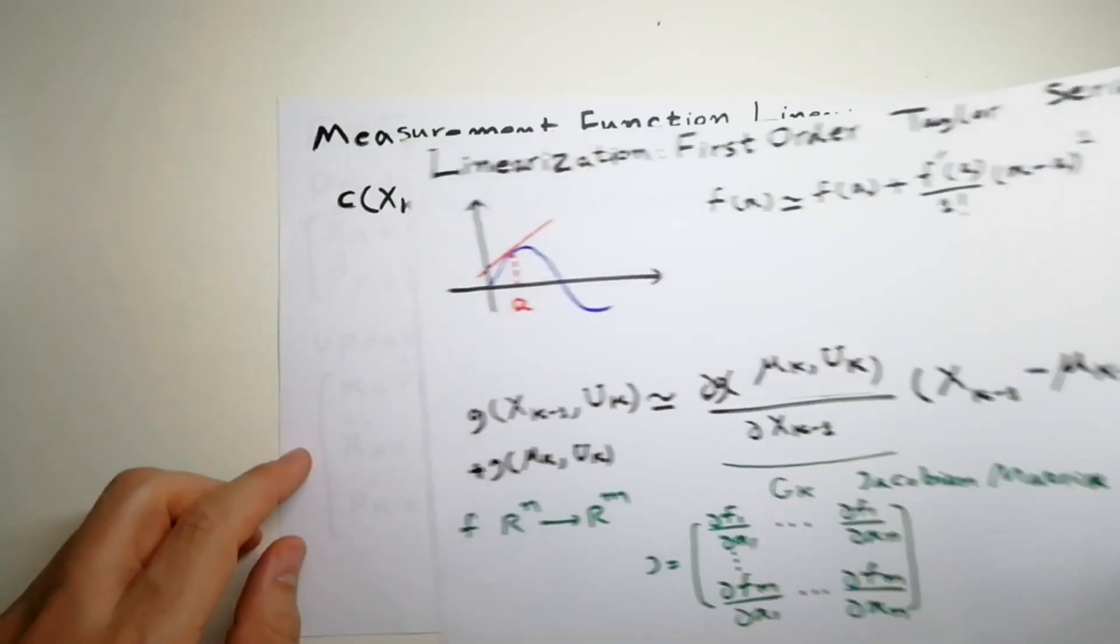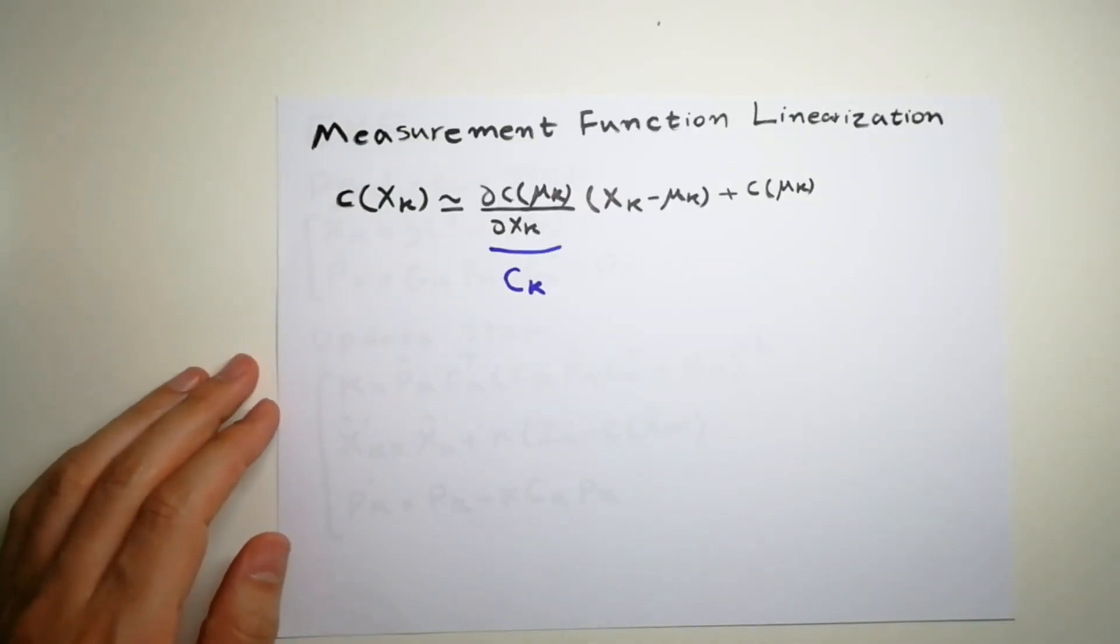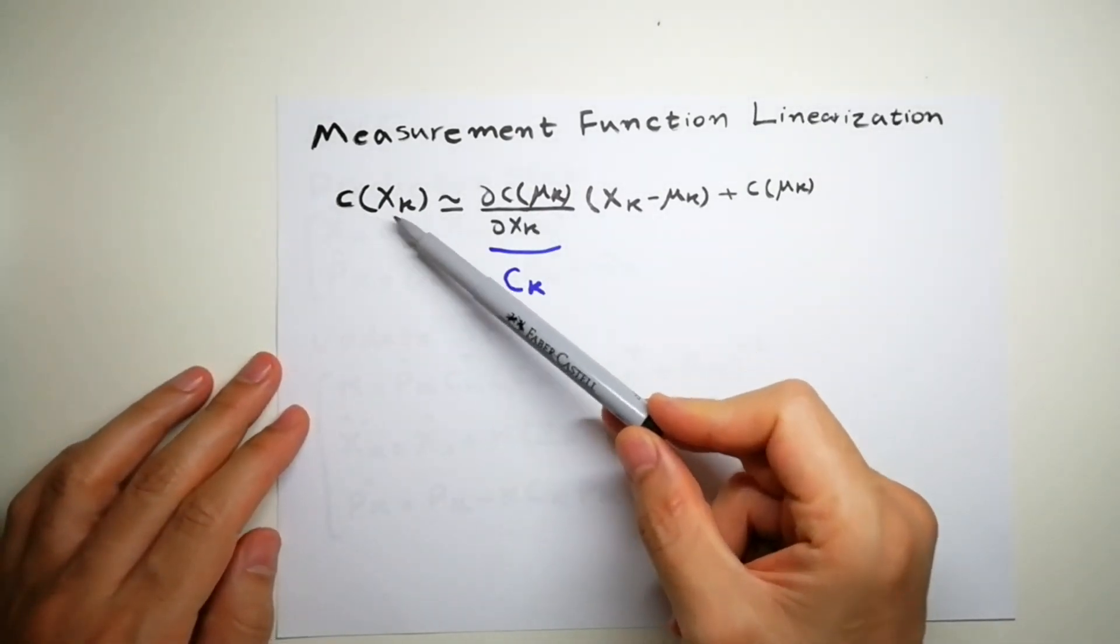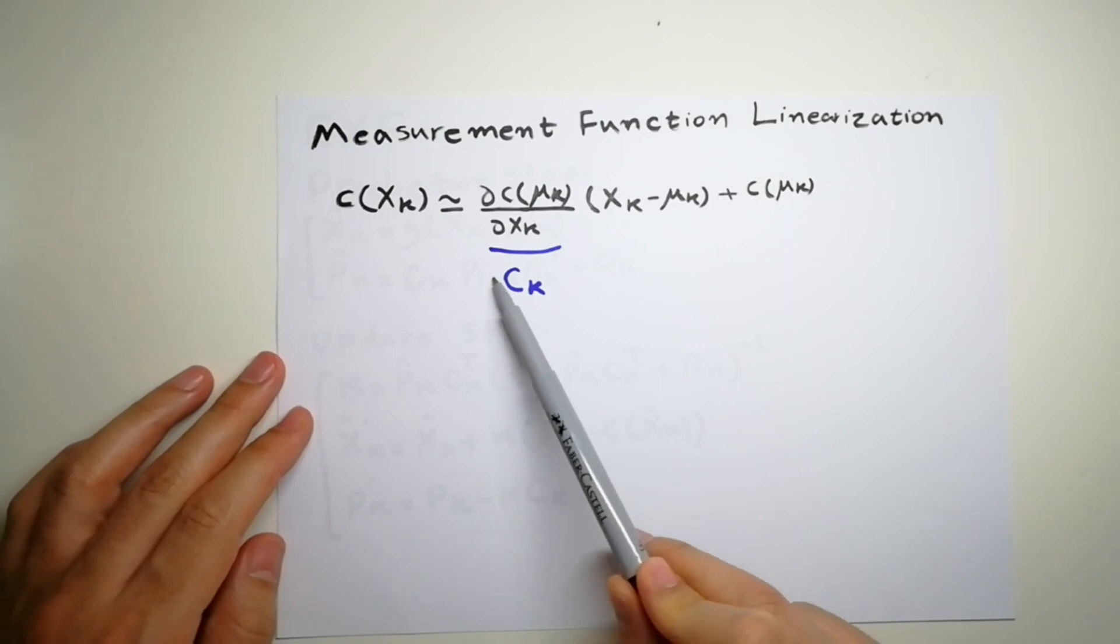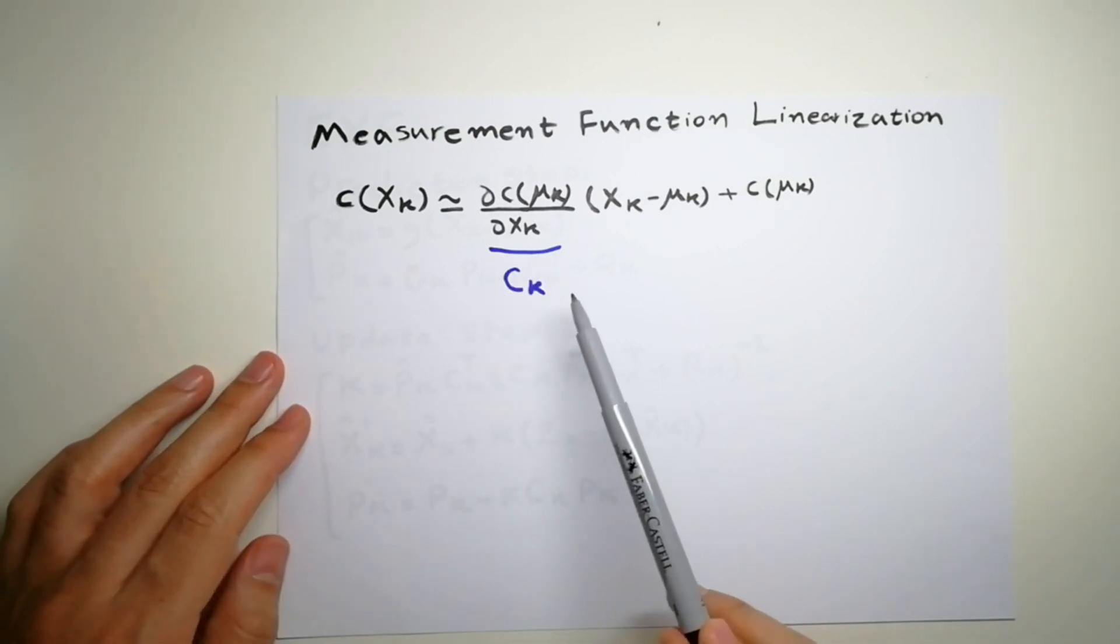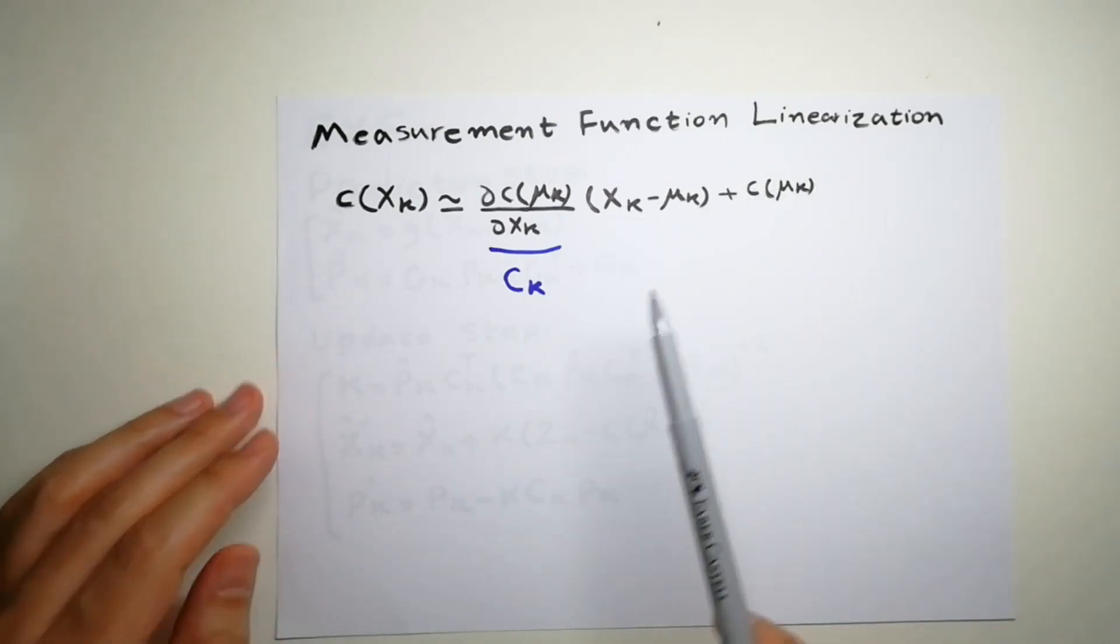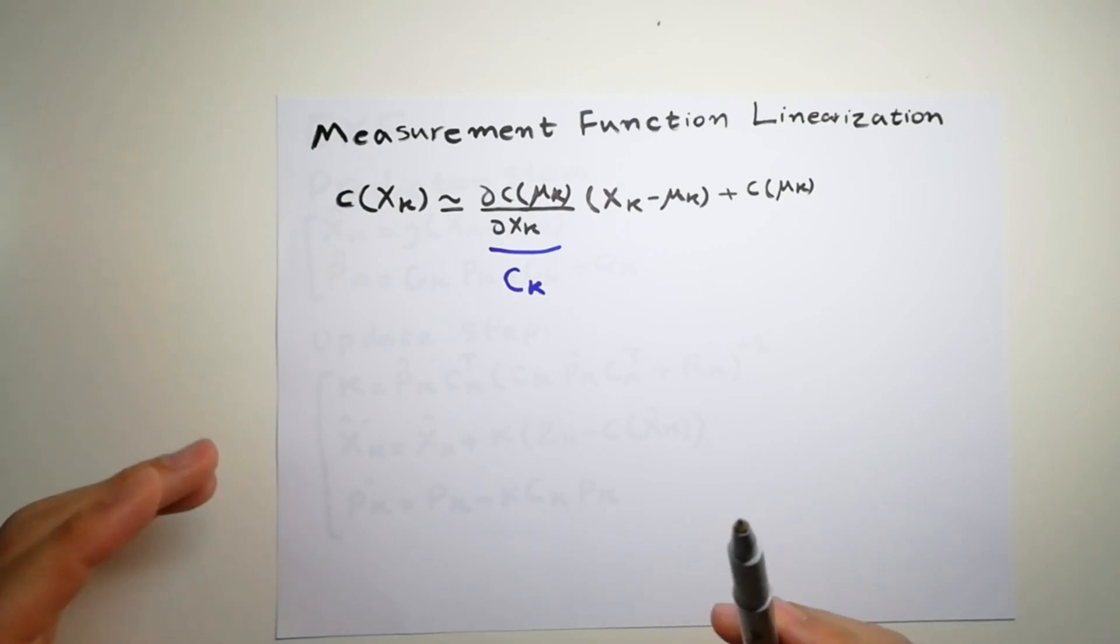It's the same for measurement function. We also linearize the measurement function, C of xk, and we call it C of k, Jacobian of the matrix here, plus a value of the measurement on that particular point.